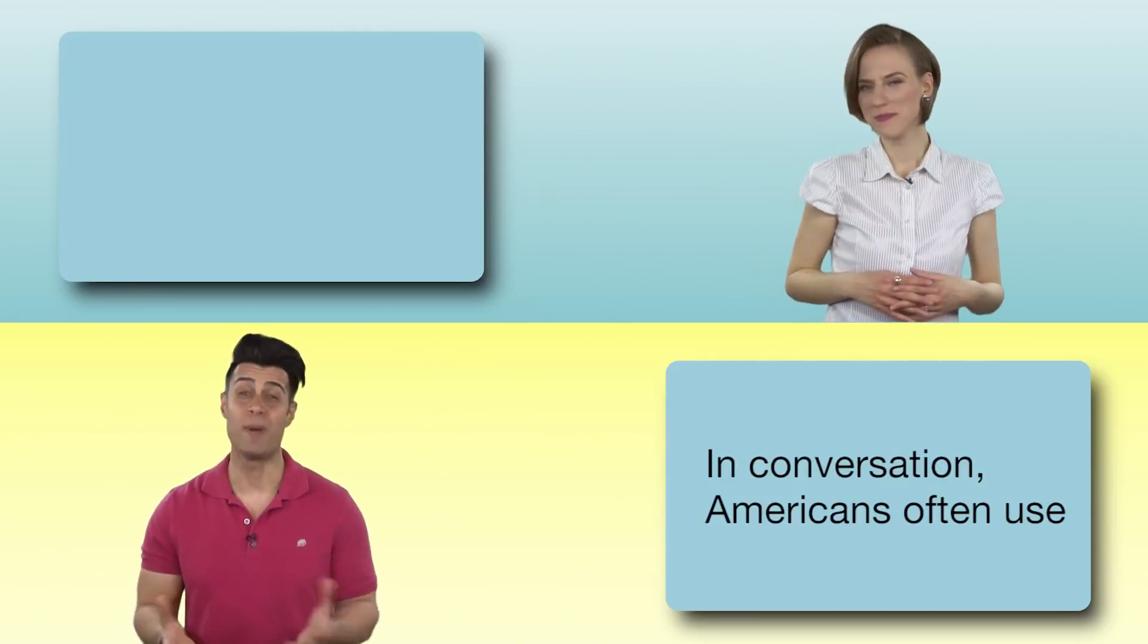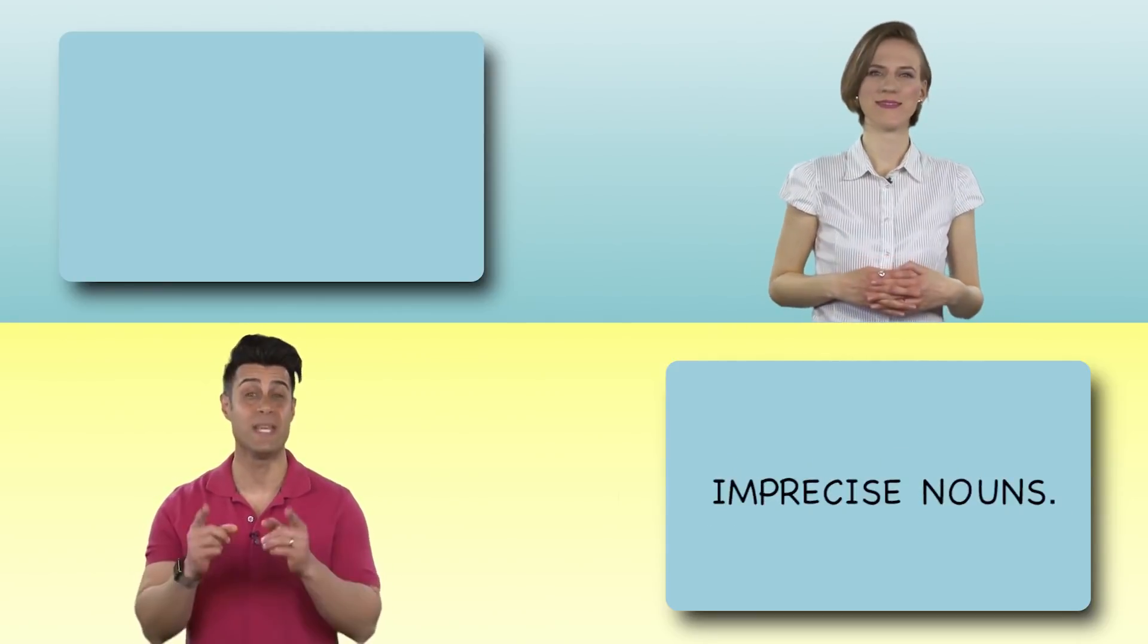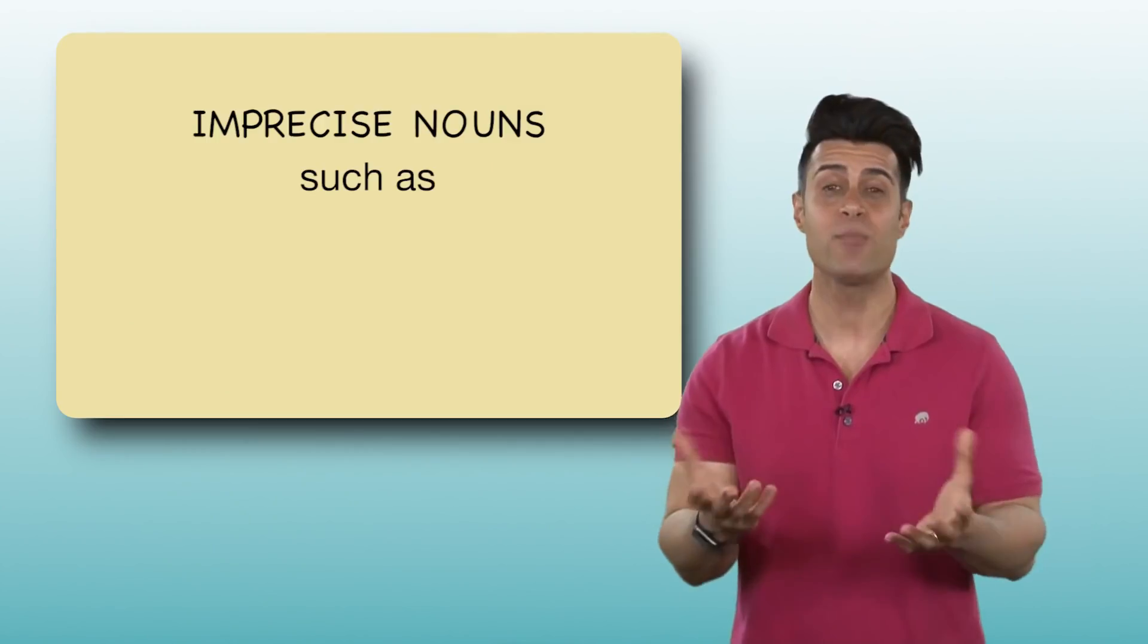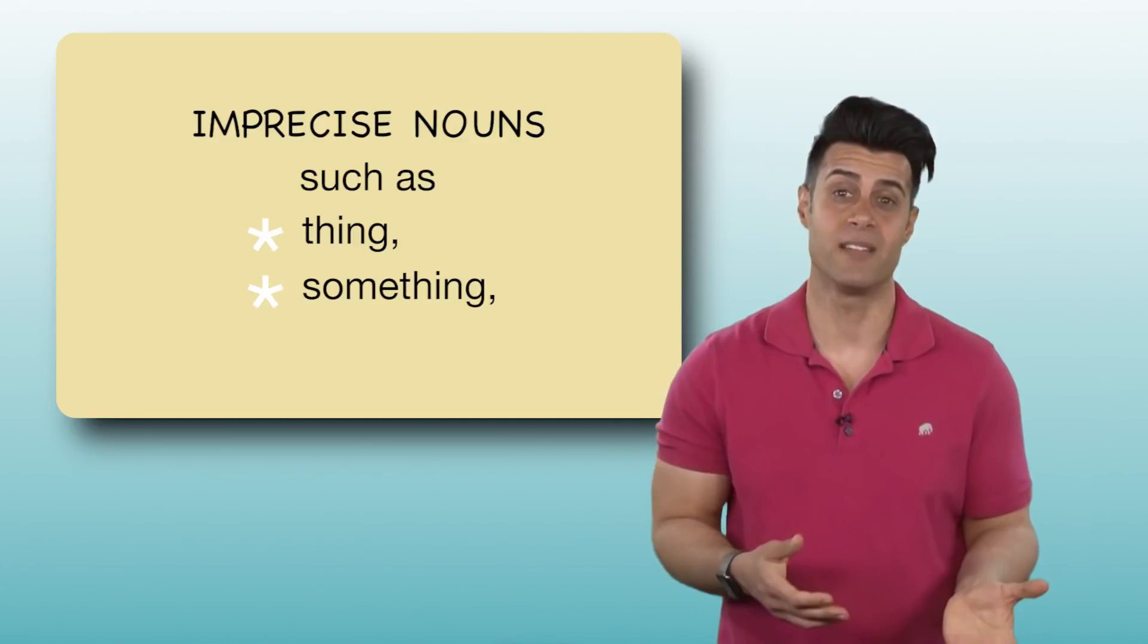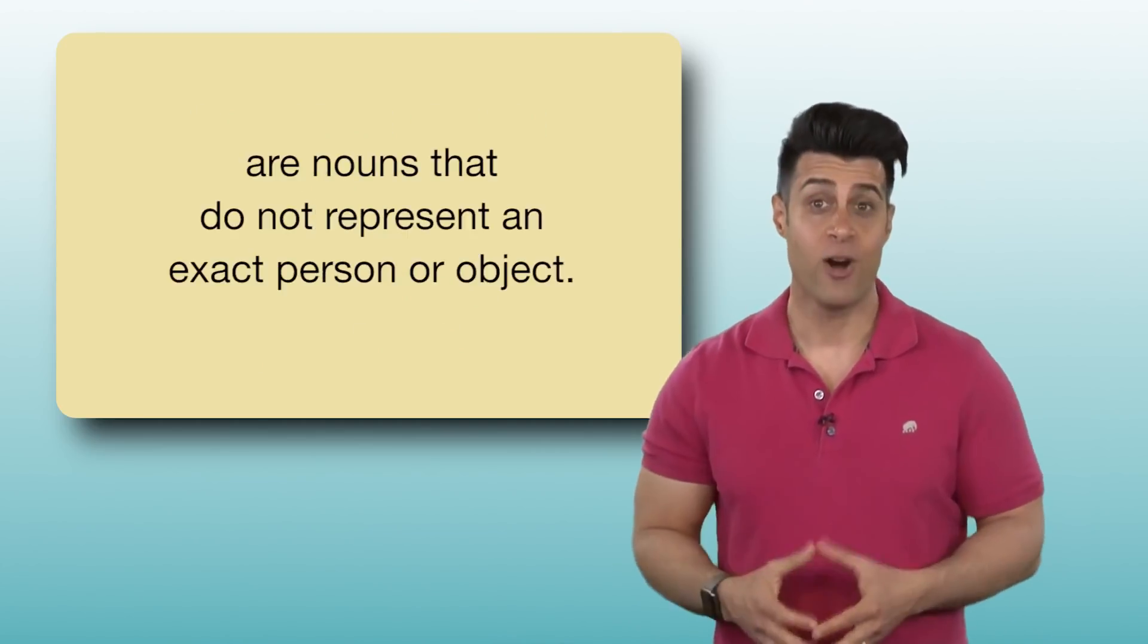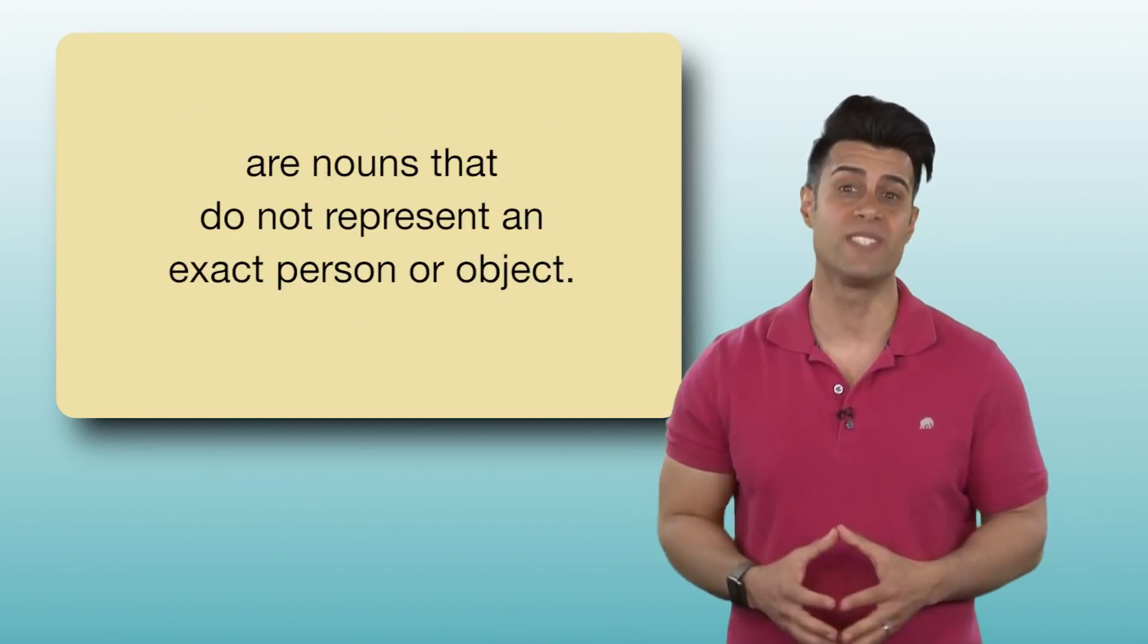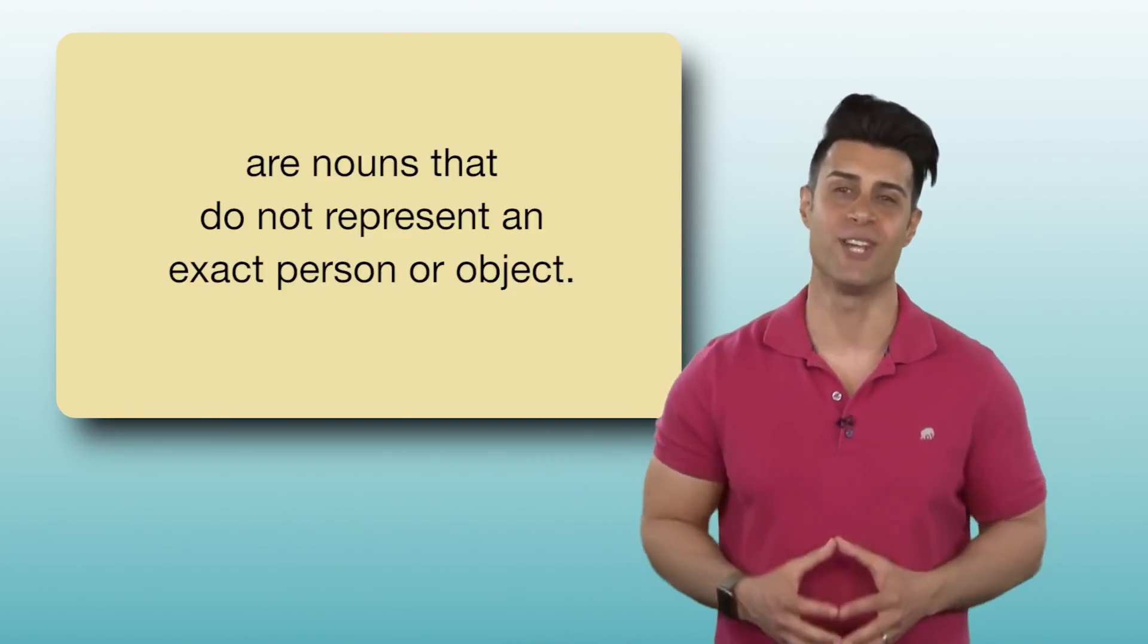In conversation, Americans often use imprecise nouns. Imprecise nouns such as thing, something, and stuff are nouns that do not represent an exact person or object.